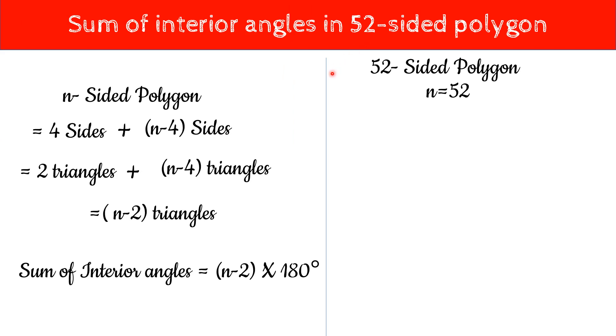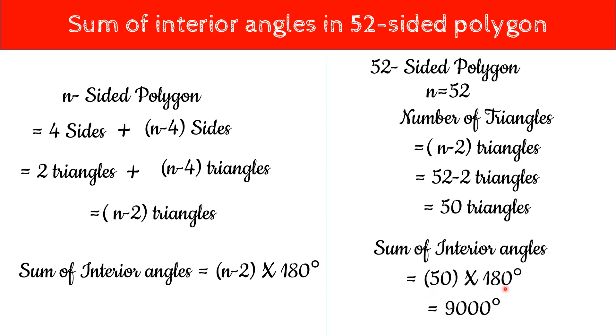Suppose, we had a 52-sided polygon and we have to find out the sum of interior angles. Then, n equals 52. Sum of interior angles are going to be number of triangles multiply by 180 degrees. Number of triangles are n-2, so it is 50. Then, it would be 50 times 180, that is 9000 degrees. 9000 degrees is the sum of interior angles of a 52-sided polygon.